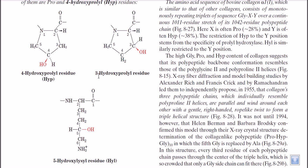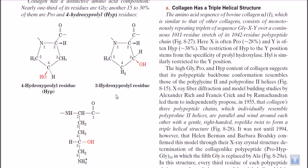Not only hydroxyproline residues can be found in collagen structure, but we can also find hydroxylysine residues. As you know, the R group of lysine has four CH2 groups and one NH3 at the end. In hydroxylysine, at the fifth carbon position, a hydroxyl group is attached instead of H2, so it is called the 5-hydroxylysine residue. Importantly, these modified amino acid sequences are produced after the synthesis of the protein — they are post-translational modifications rather than co-translational modifications.